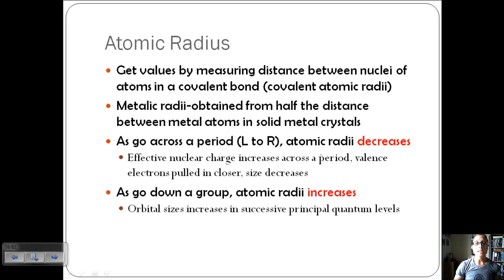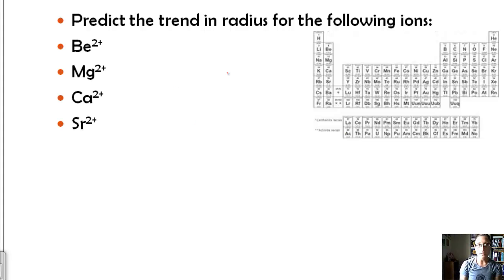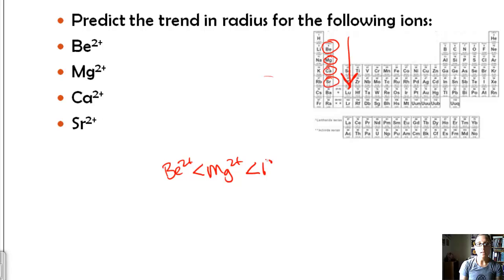As we go down a group, atomic radii increases because the orbital size increases as we go down principal quantum levels — electrons are getting further from the nucleus, so we have a bigger atom. For example, to predict the trend in radius for Be²⁺, Mg²⁺, Ca²⁺, and Sr²⁺: they're all in the same group, so atomic size increases going down — beryllium is smaller than magnesium, which is smaller than calcium, which is smaller than strontium.